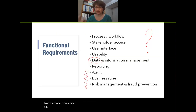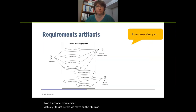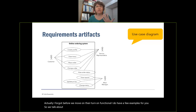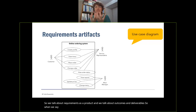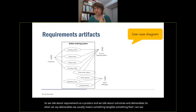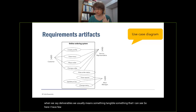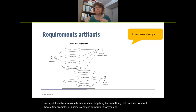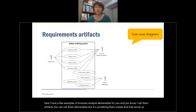Before moving on to non-functional requirements, I have a few examples for you. We talk about requirements as a product and outcomes and deliverables — when we say deliverables we usually mean something tangible, something I can see. Here are a few examples of business analysis deliverables. I call them artifacts — they are visible and serve to communicate requirements.